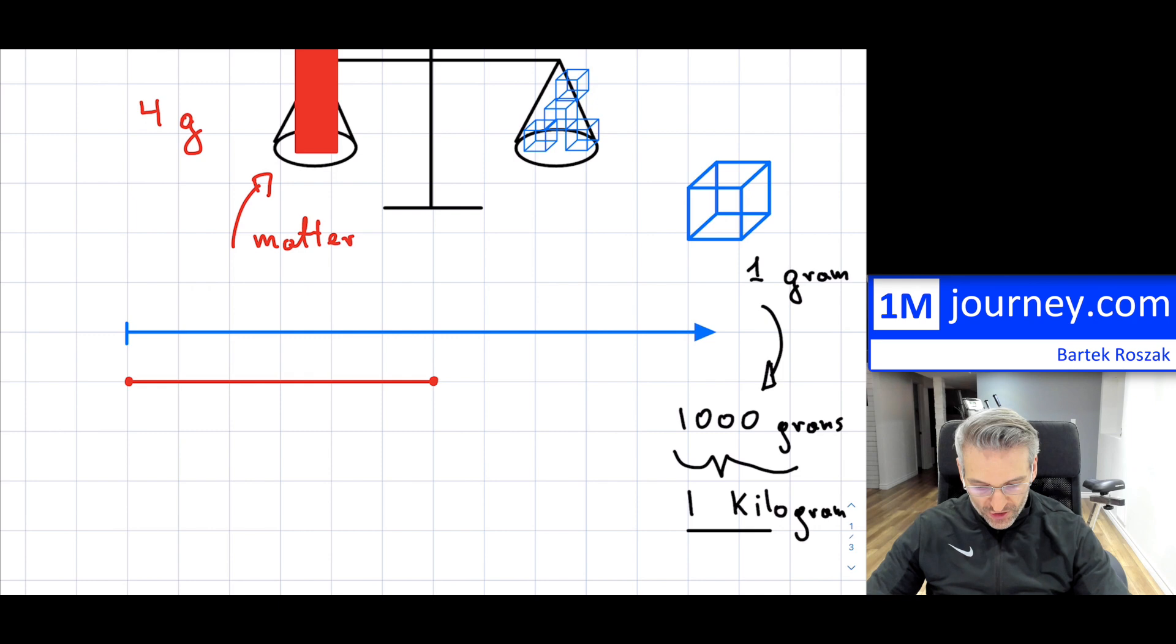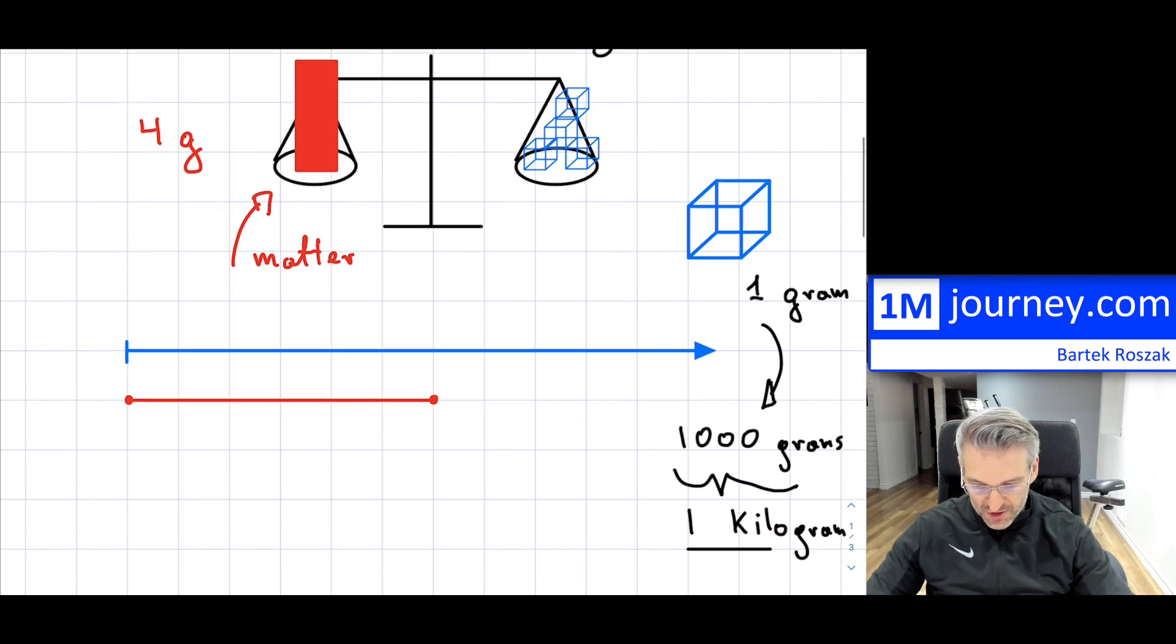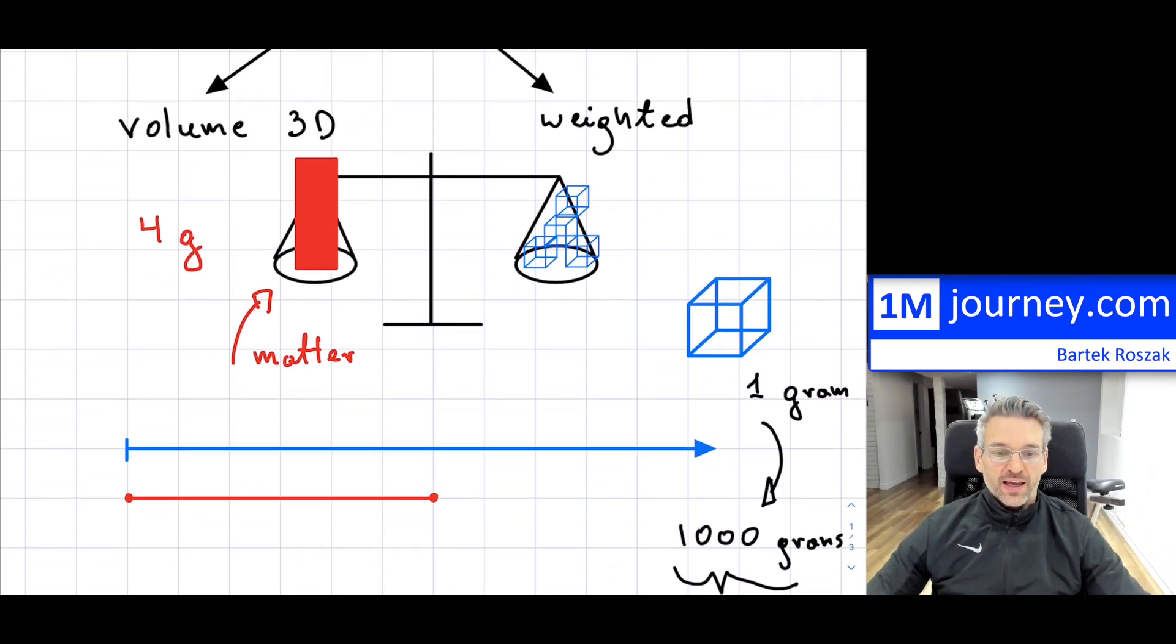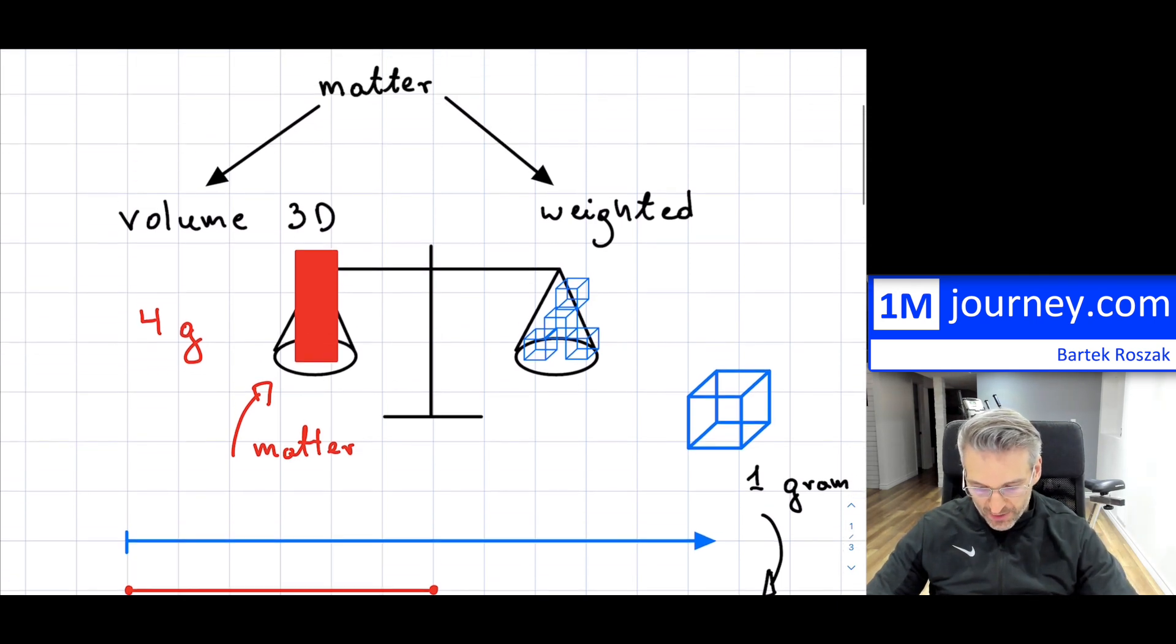because 1 kilogram is actually a little bit more, it's 1,000 times more than a gram, and it's much more convenient for the items that we're actually using,